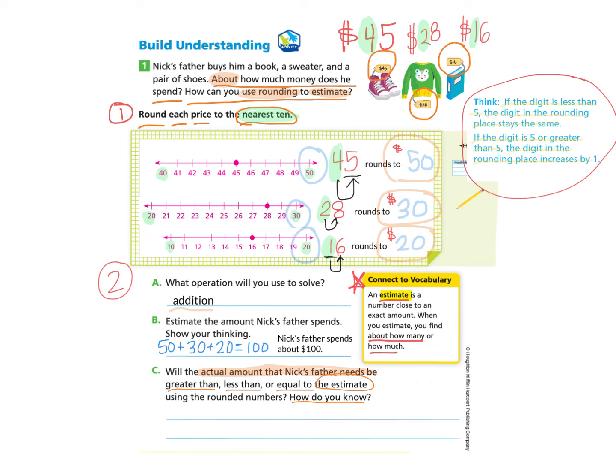or will it be exactly equal to the estimate that we have provided using those rounded numbers, which gave us a hundred dollars?